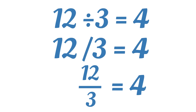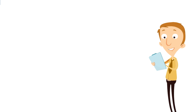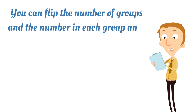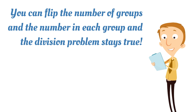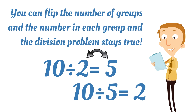These are the three ways that you can write the division sign — pretty interesting. The final fact is this: you can flip the number of groups and the number in each group, and the division problem stays true. For example, 10 divided by 2 equals 5, and you can flip the 2 and the 5 and it stays true — that means 10 divided by 5 equals 2.